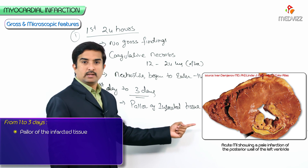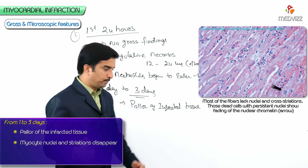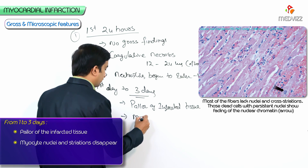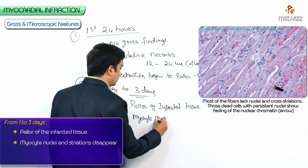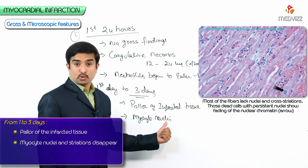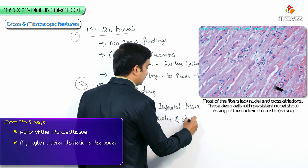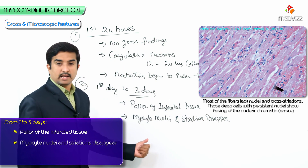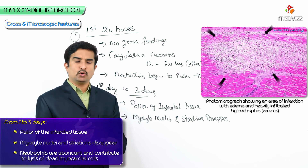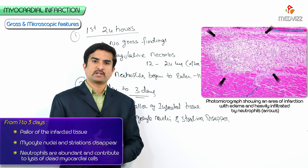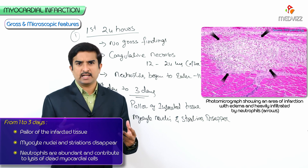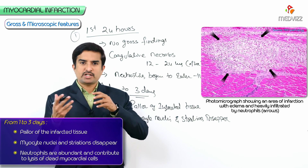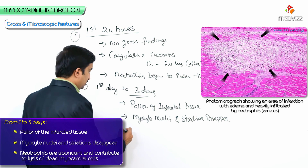The myocyte nuclei and striations disappear during this period — an important marker of the irreversible process. The neutrophils are also abundant, because during the acute inflammatory process in the first 72 hours, neutrophilia predominates and neutrophils are predominantly seen in the inflamed area.